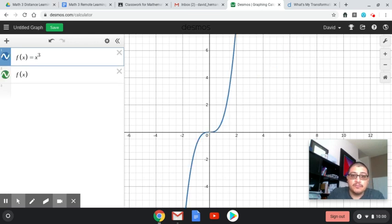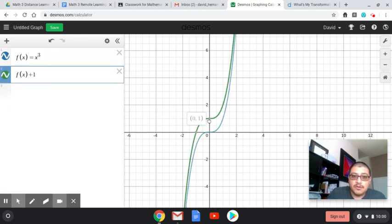Again, starting at 0, 0. If we add one outside of it, it will go up to 1. If we subtract one inside of it, it will go right 1.